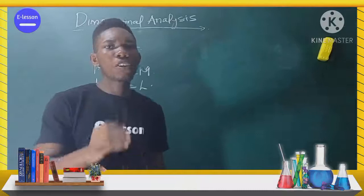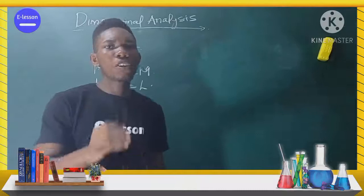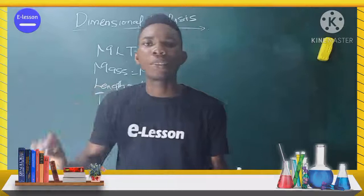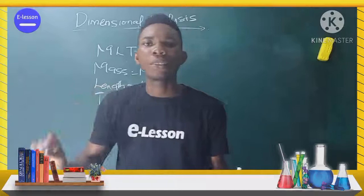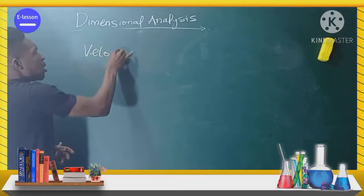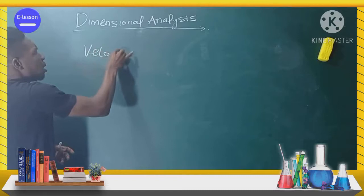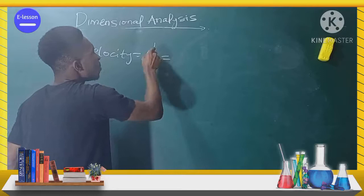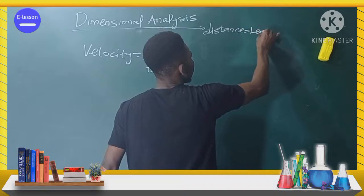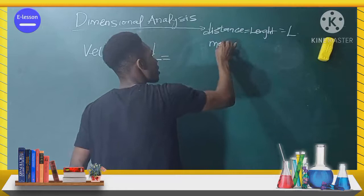Dimensional analysis gives the relationship between other physical quantities. It tells you how many of the fundamental quantities are contained within a derived quantity. Now let's look at velocity. The formula for velocity is distance over time. The dimension for distance is L and the dimension for time is T.